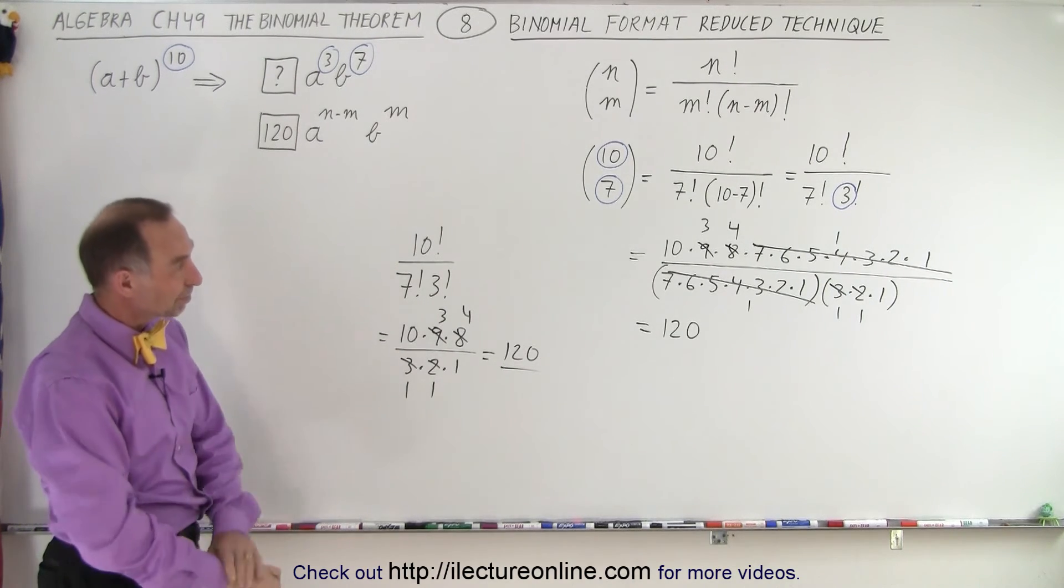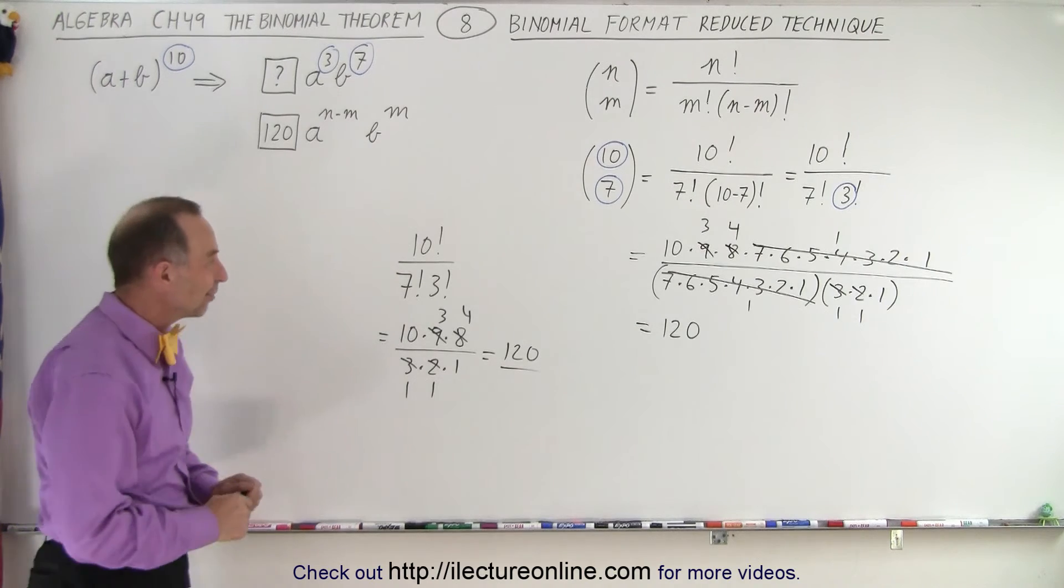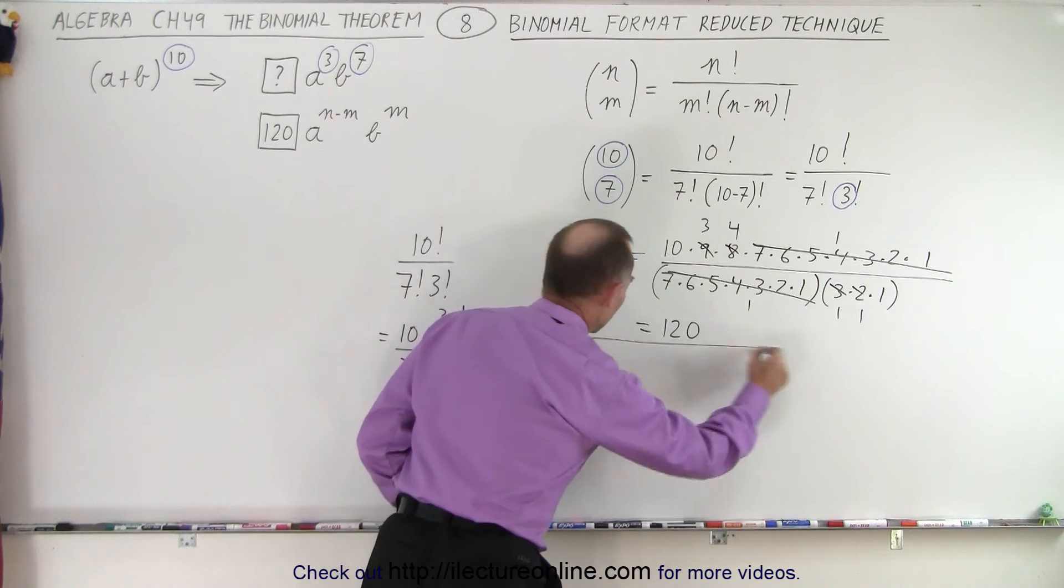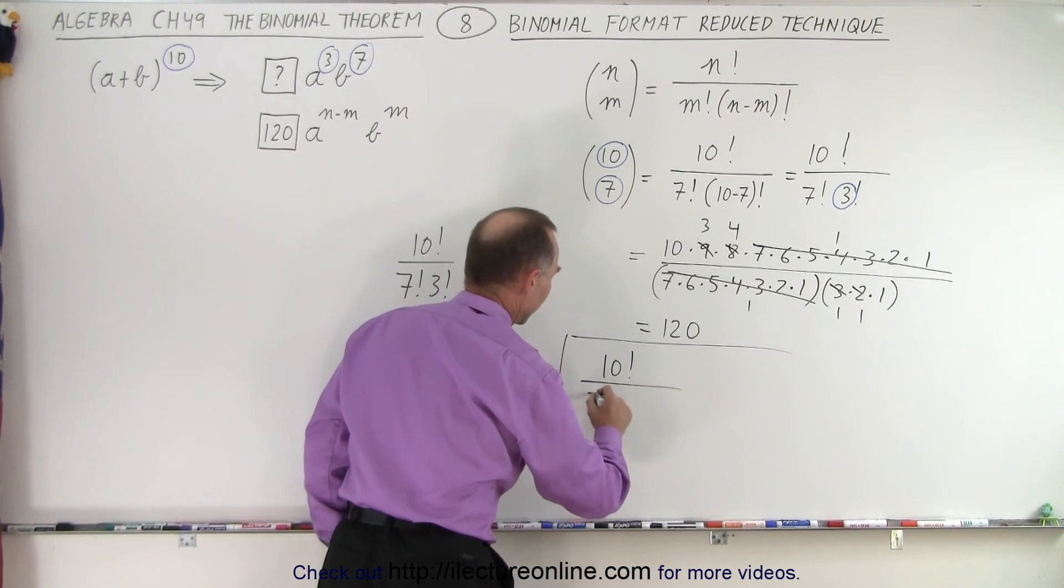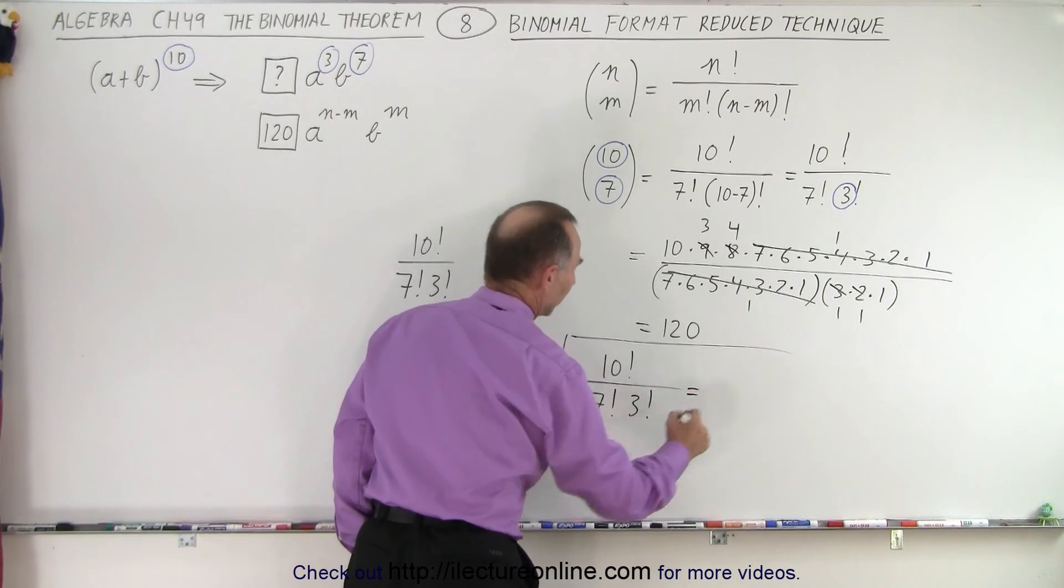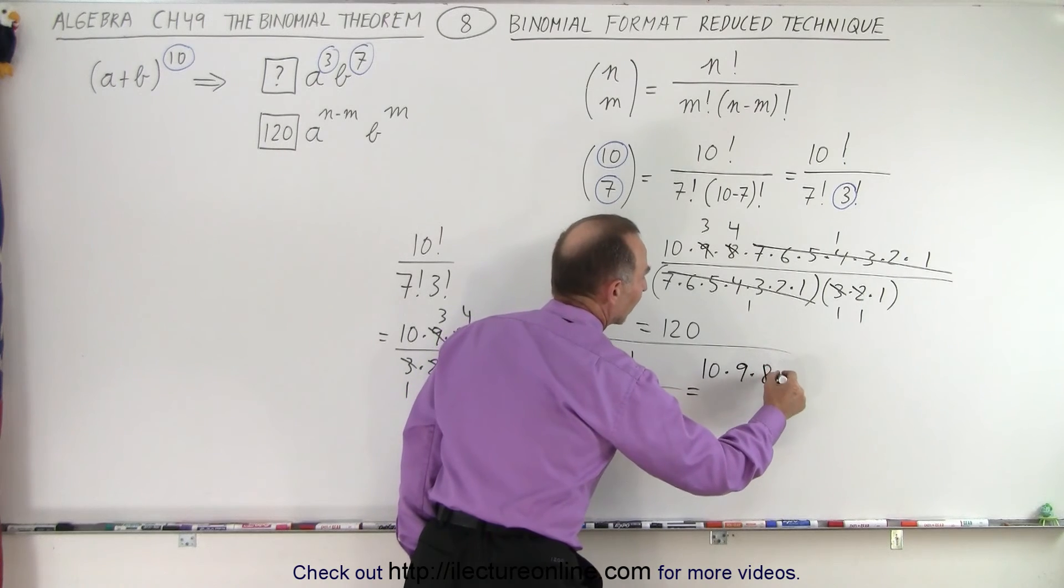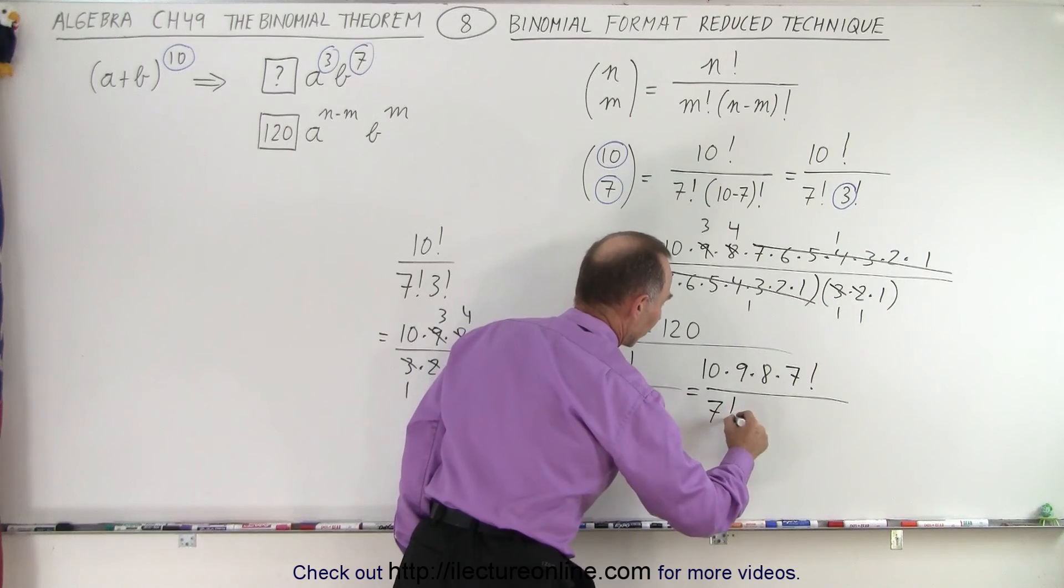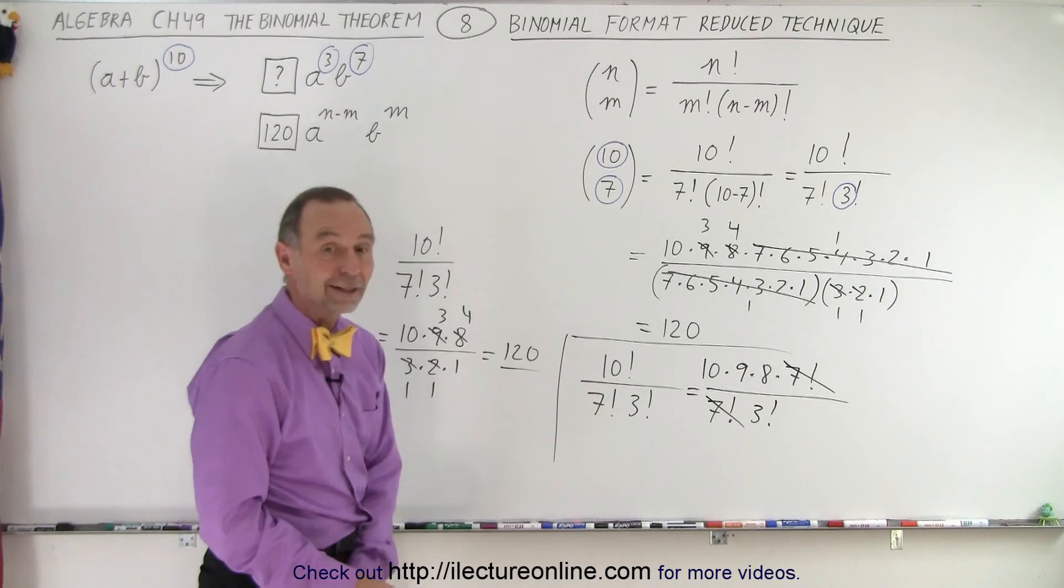I think the way you're supposed to do it, you write down 10 times 9 times 8 times 7 factorial. That's an interesting observation. So what you're saying is when you see something like this, if we have 10 factorial divided by 7 factorial times 3 factorial, you could write this as 10 times 9 times 8 times 7 factorial divided by 7 factorial times 3 factorial, and then this cancels out with that, and that makes it a lot easier.